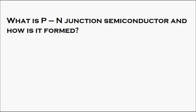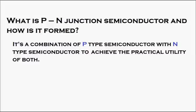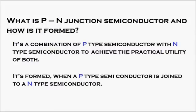What is a PN junction semiconductor and how is it formed? It is a combination of a P-type semiconductor with an N-type semiconductor to achieve the practical utility of both. It is formed when a P-type semiconductor is joined to an N-type semiconductor. With the help of this animation, let's see how the P-type and N-type semiconductors work.